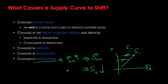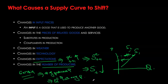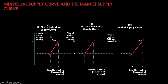The last shifter is the number of producers. If more producers enter the market — called entry — the overall quantity supplied increases at any given price and the supply curve shifts to the right. If producers leave the industry — called exit — the supply curve shifts to the left.